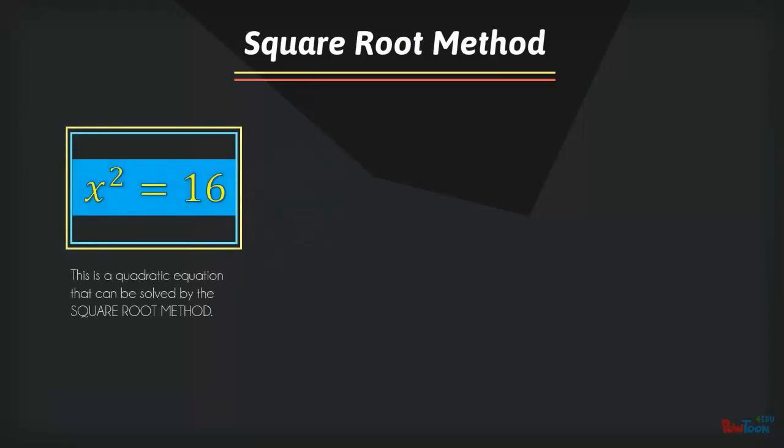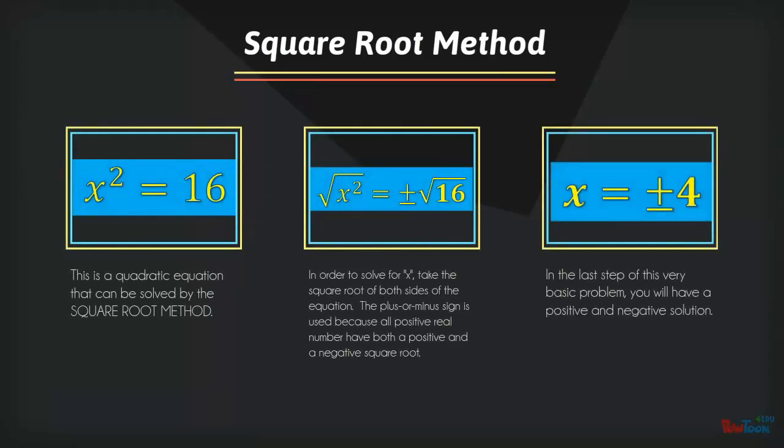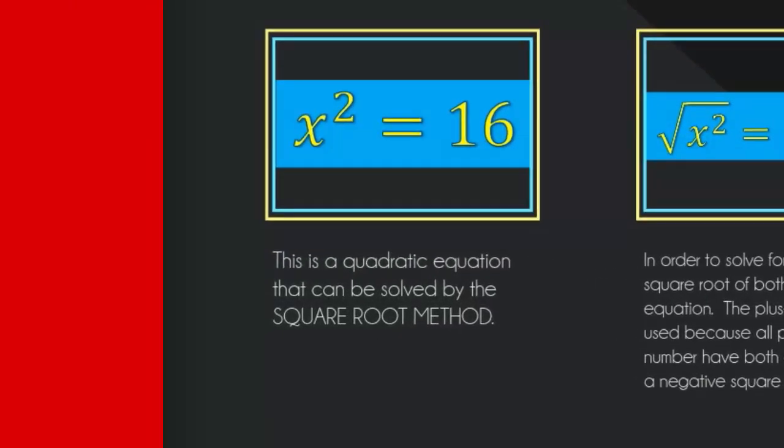Here's the first equation. It's very easy. x squared equals 16. You know that 16 is a perfect square.